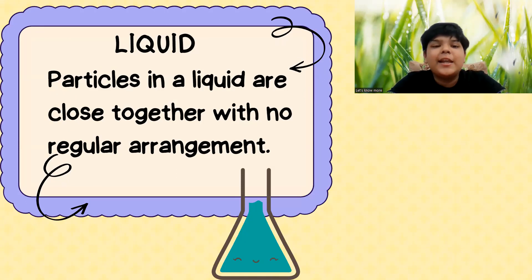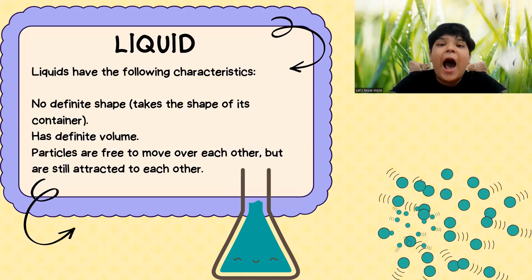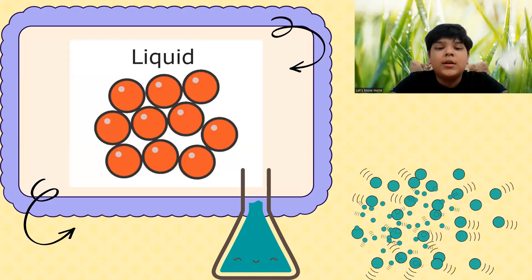Liquid. Particles in a liquid are close together with no regular arrangement. Liquids have the following characteristics: no definite shape, takes the shape of its container, has definite volume. Particles are free to move over each other but are still attracted to each other. This is the arrangement of molecules in a liquid substance.